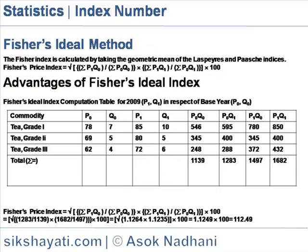Fisher's ideal method. The Fisher's index is calculated by taking the geometric mean of Laspeyre's index and Paasche's index. Fisher's price index is: square root of (sigma P1Q0 / sigma P0Q0) multiplied by (sigma P1Q1 / sigma P0Q1), into 100.